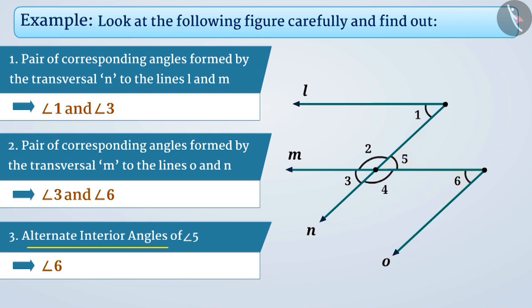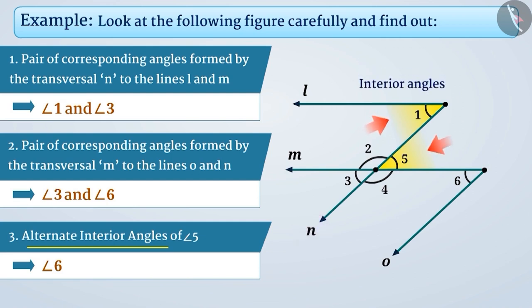In the given figure, there is another alternate interior angle of angle 5. The vertex of angle 1, formed by the transversal N to the lines L and M, is different from the vertex of angle 5. Both angles are interior and on the opposite side of the transversal N. So we can say that angle 1 is also the alternate interior angle of angle 5. Therefore, the alternate interior angles of angle 5 are angle 6 and angle 1.